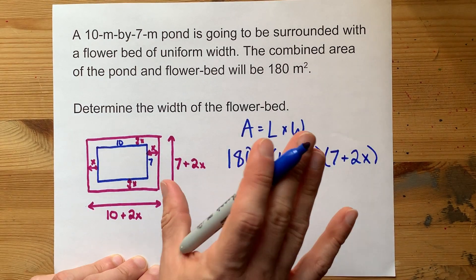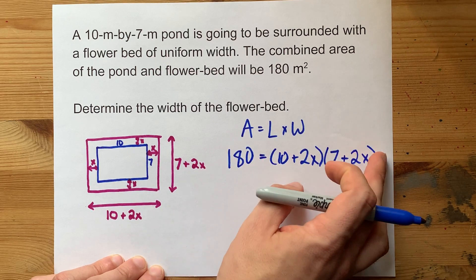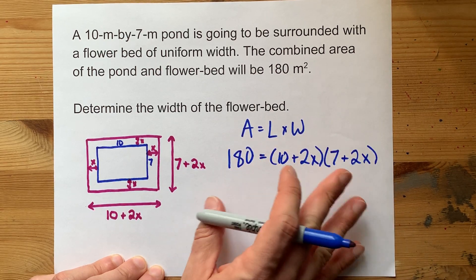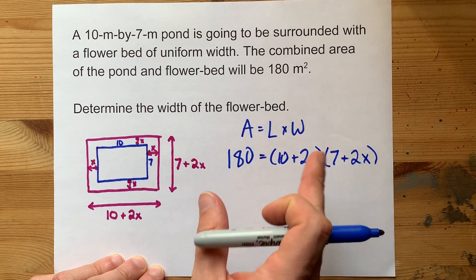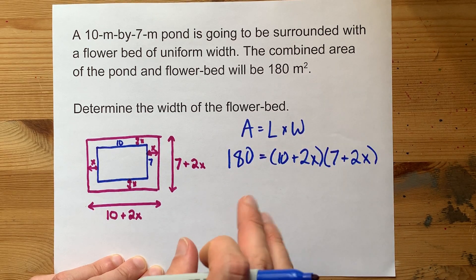The way that we solve quadratic equations is to multiply everything out, get rid of all these brackets, get it in standard form where one side is zero. Here's what I mean.